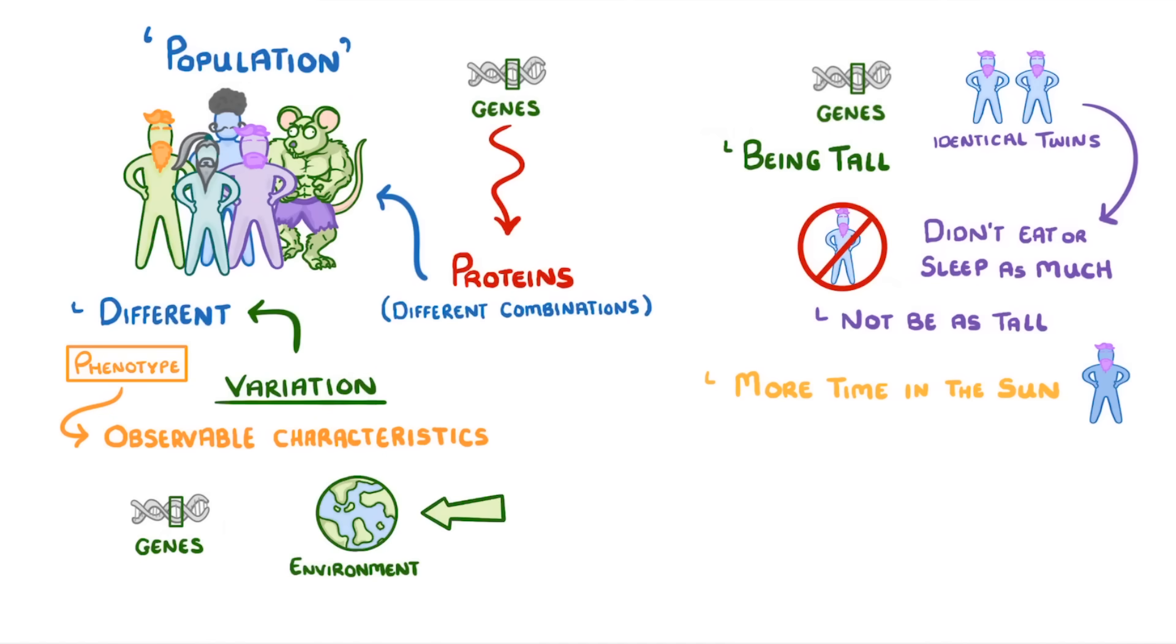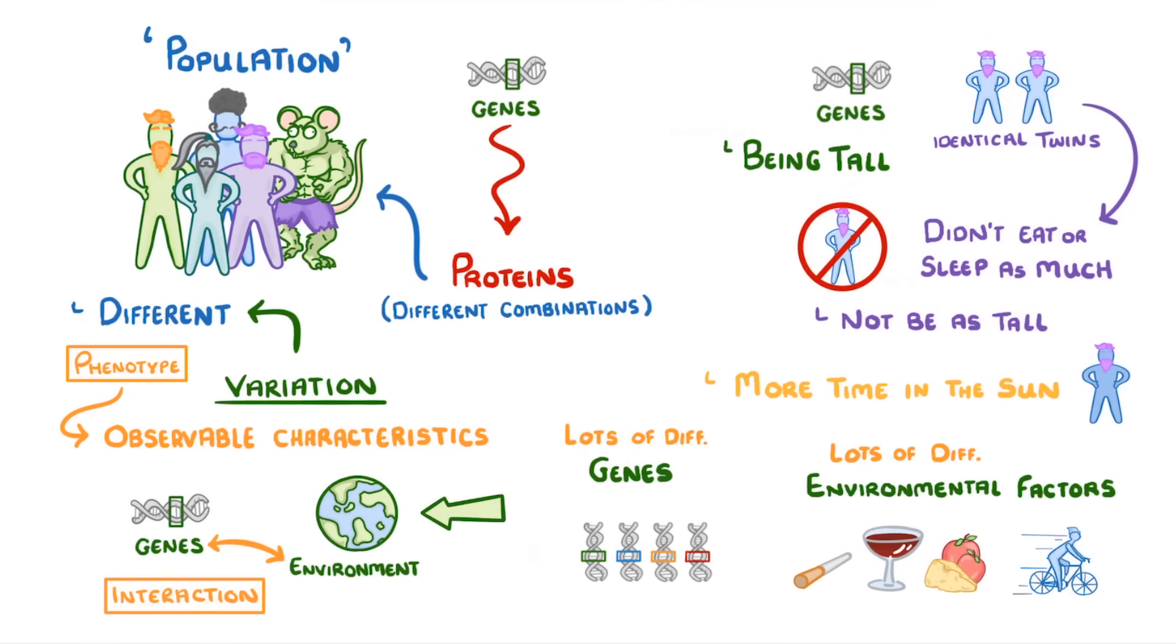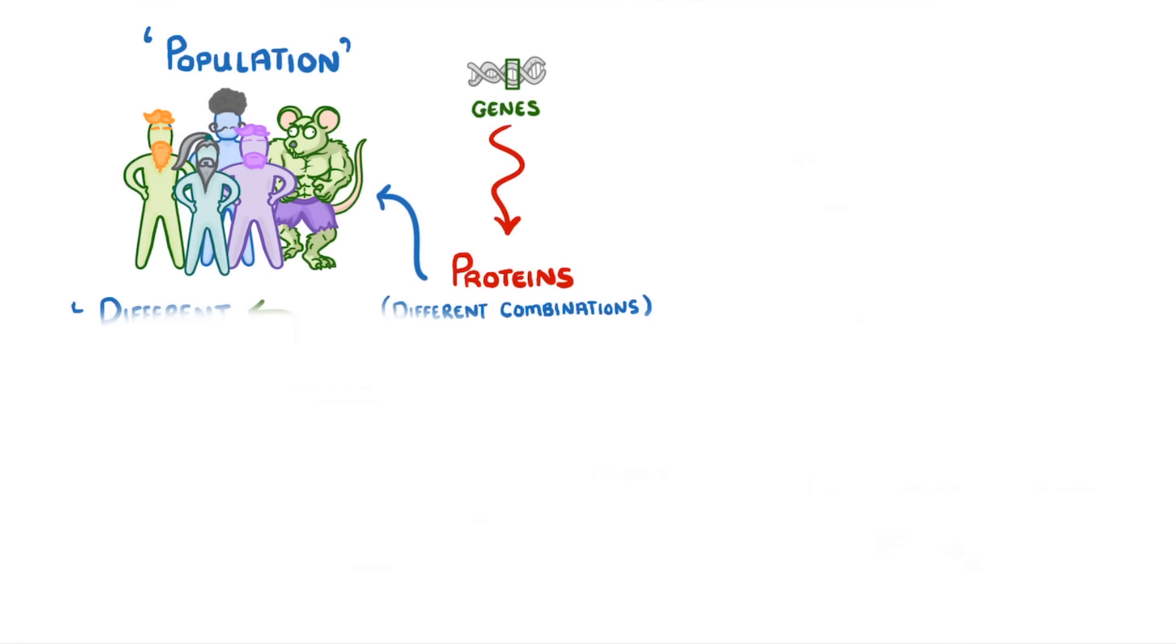The key point to remember with all of this is that most of our characteristics are determined by the interaction of our genes and our environment. In fact, most of our traits are influenced by lots of different genes and lots of different environmental factors. Now the fact there are so many different environmental factors kind of makes sense - we all do different things, eat different foods, and so on.